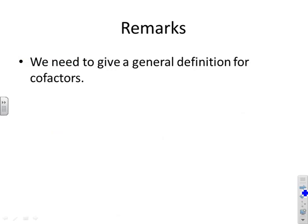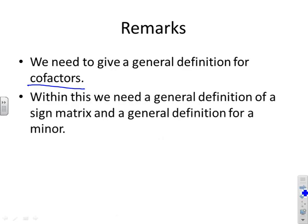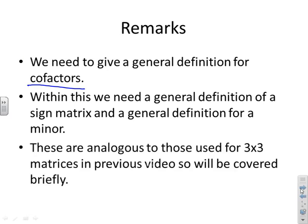So remarks. We need a general definition for cofactors because we did it in the previous video for 3x3. But what happens for 4x4, 5x5 and so on? And therefore, we need a general definition of a sign matrix and a general definition for a minor. And what you'll be pleased to know is these are exactly analogous to those we used for 3x3 matrices. So if you understood 3x3 matrices, you'll follow the extension. You'll say, well, that's sort of obvious.